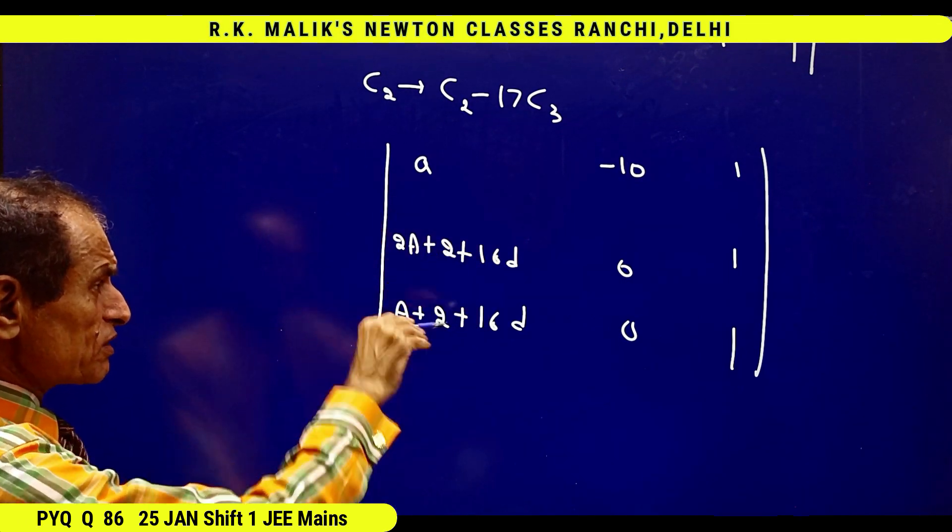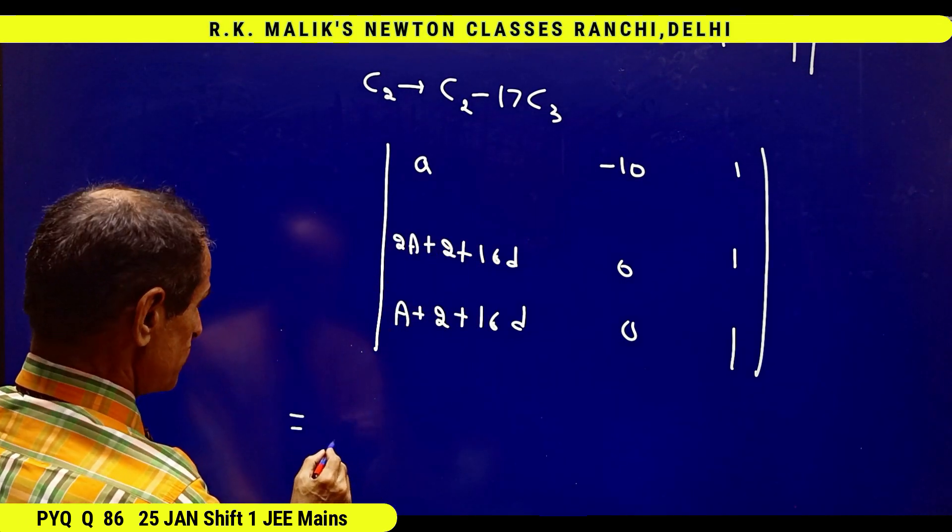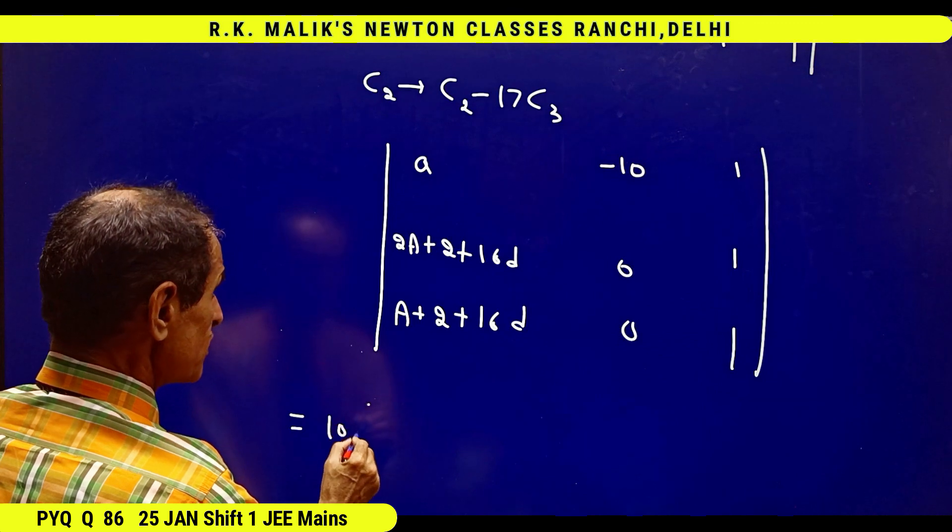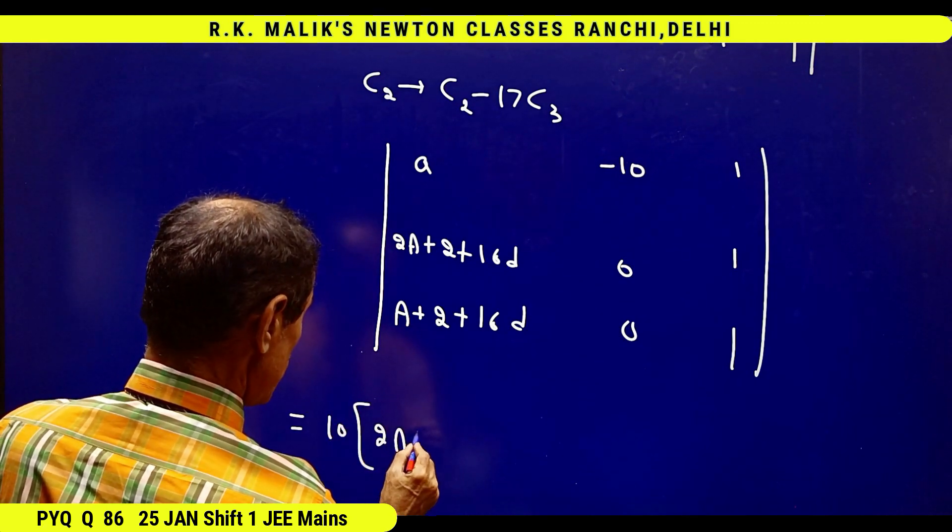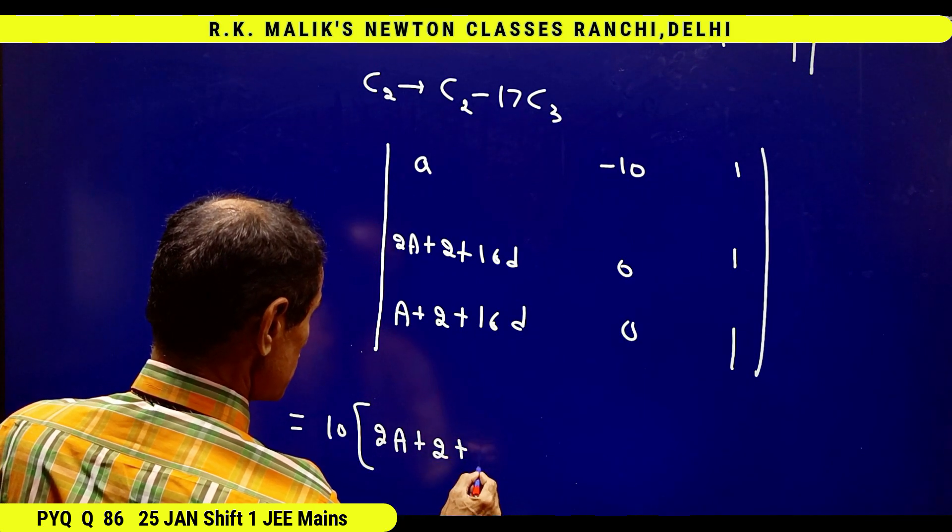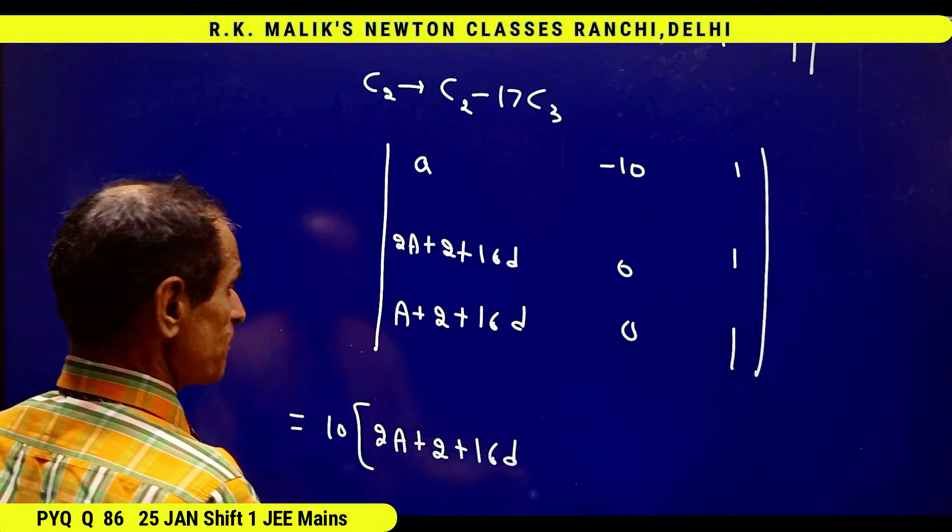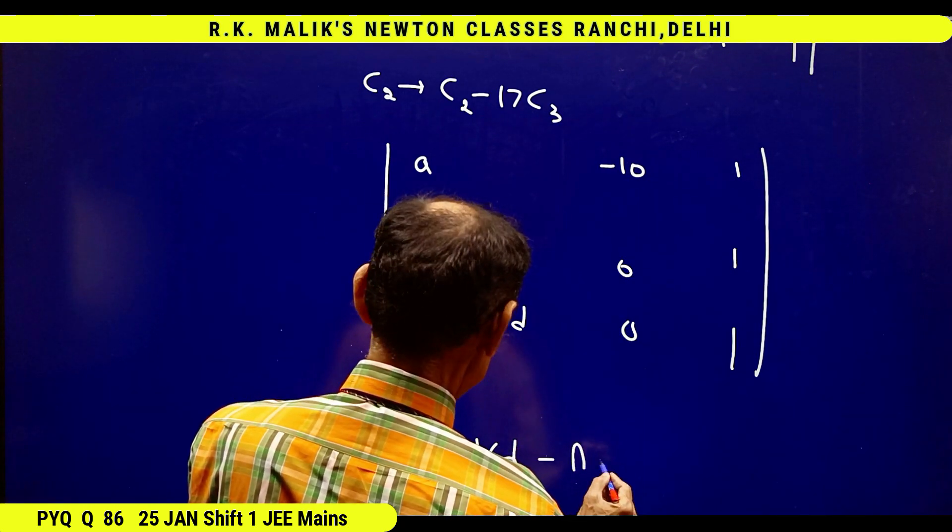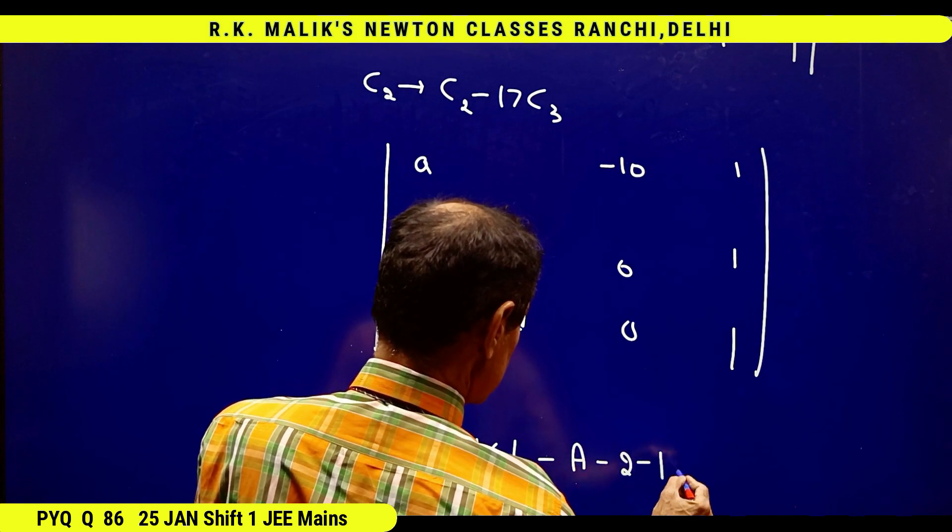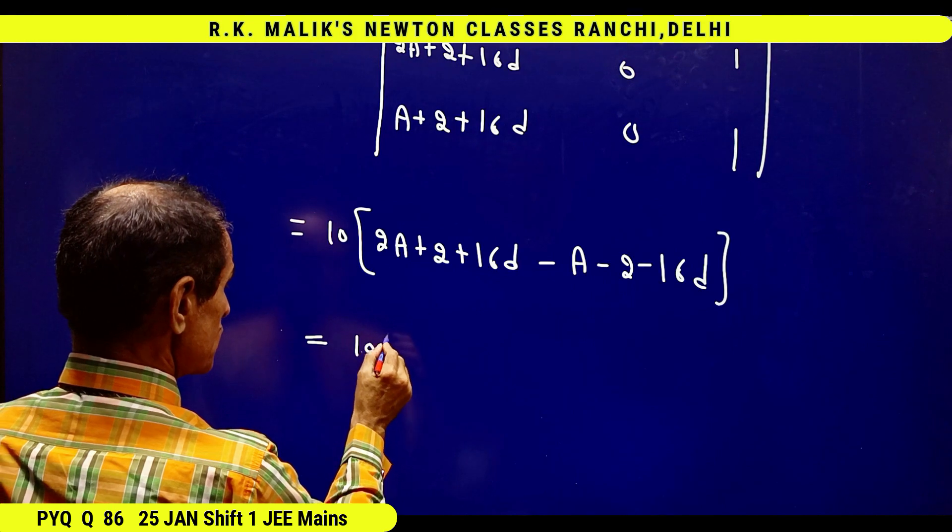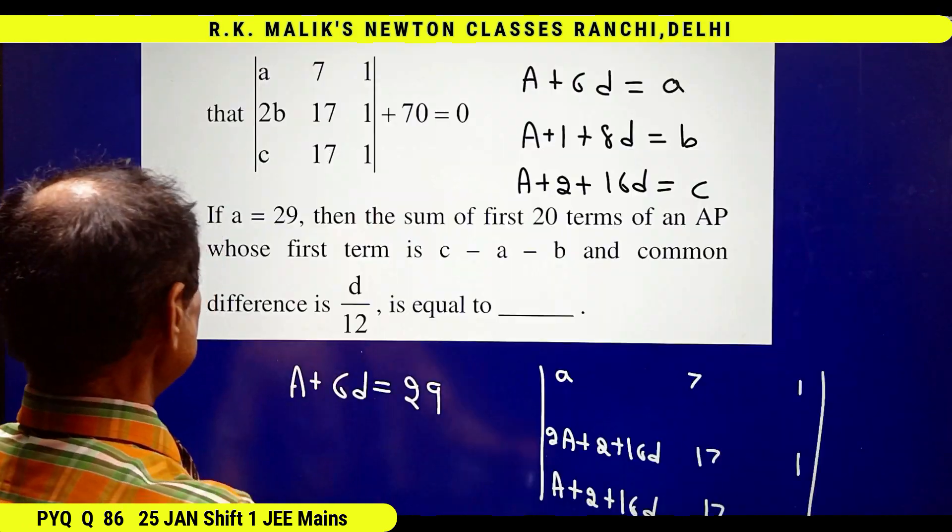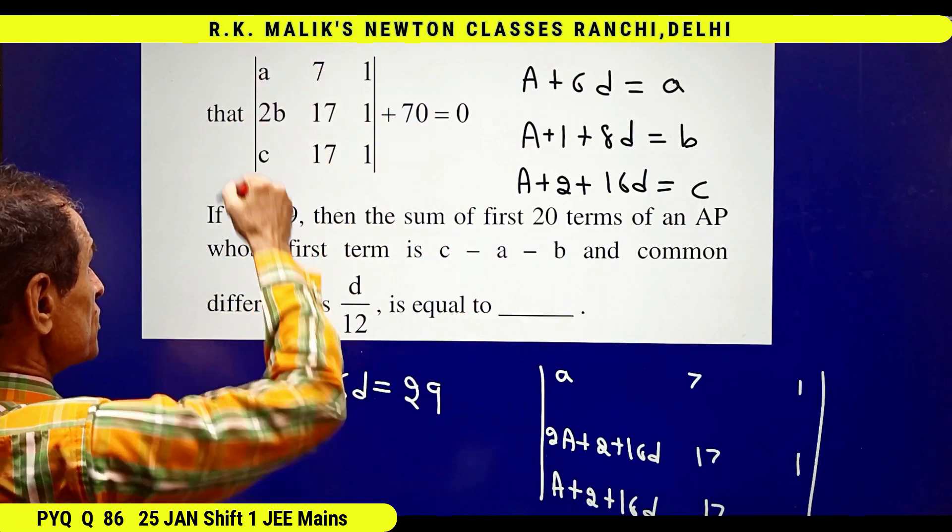When I open this determinant, I will be getting 10 times (2a plus 2 plus 16d minus a minus 2 minus 16d), which equals 10a. Because this equation was given to us and the value we found is 10a, therefore I get 10a plus 70 equals 0.